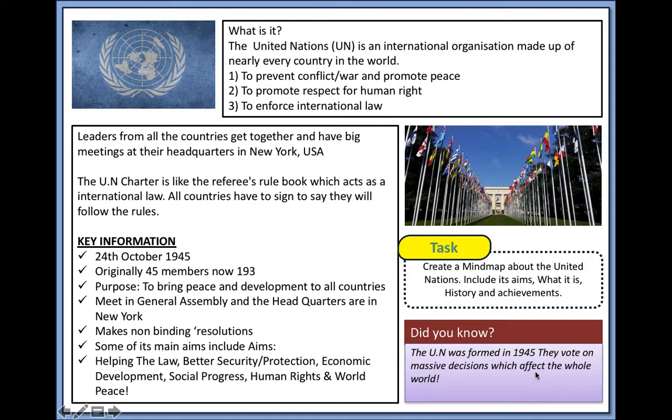The three main aims are: to prevent conflict, war and promote peace; to promote respect for human rights — there are 30 of them contained under the Universal Declaration of Human Rights, which was signed in 1948 by Eleanor Roosevelt; and to enforce international laws.